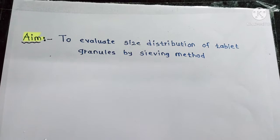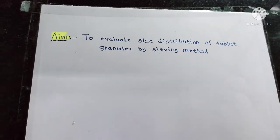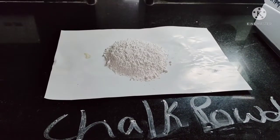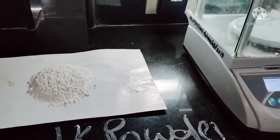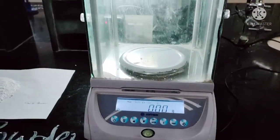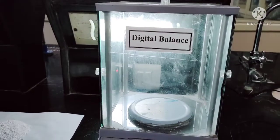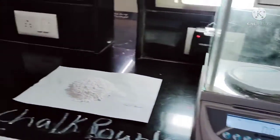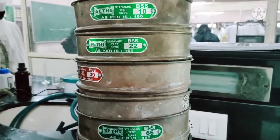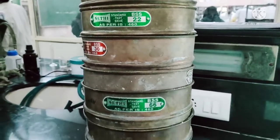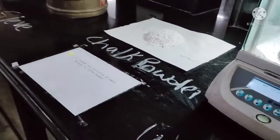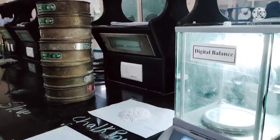The next practical is to evaluate the distribution of tablet granules by sieving method. For this practical we require chalk powder, digital balance, different number of sieves, and sieve shaker machine. We also require butter paper and spatula.